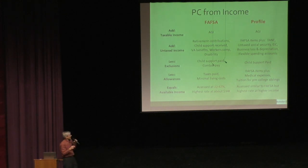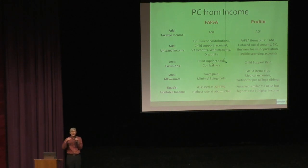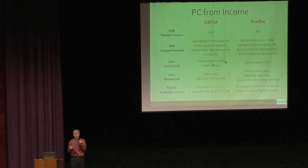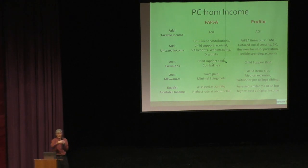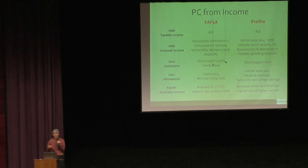In addition, the CSS Profile includes additional items of untaxed income: untaxed Social Security is added back for the profile even though it's not counted for the FAFSA. Tax losses on your return — such as capital losses from selling something at a loss — are also added back. If you're a small business owner, depreciation or losses reported on your return will be added back. They subtract certain allowances and then assess what's left in a fashion similar to the FAFSA. That's how the parent contribution from income is calculated.